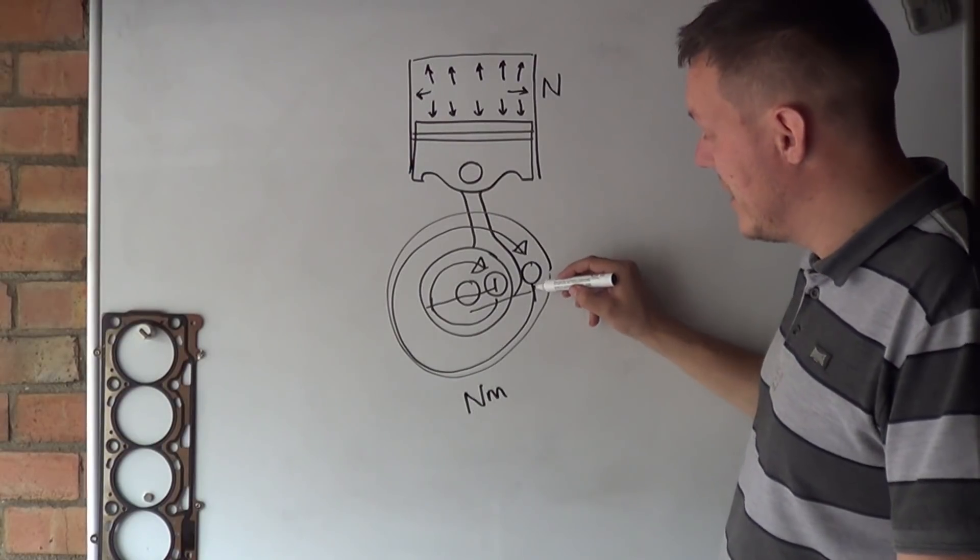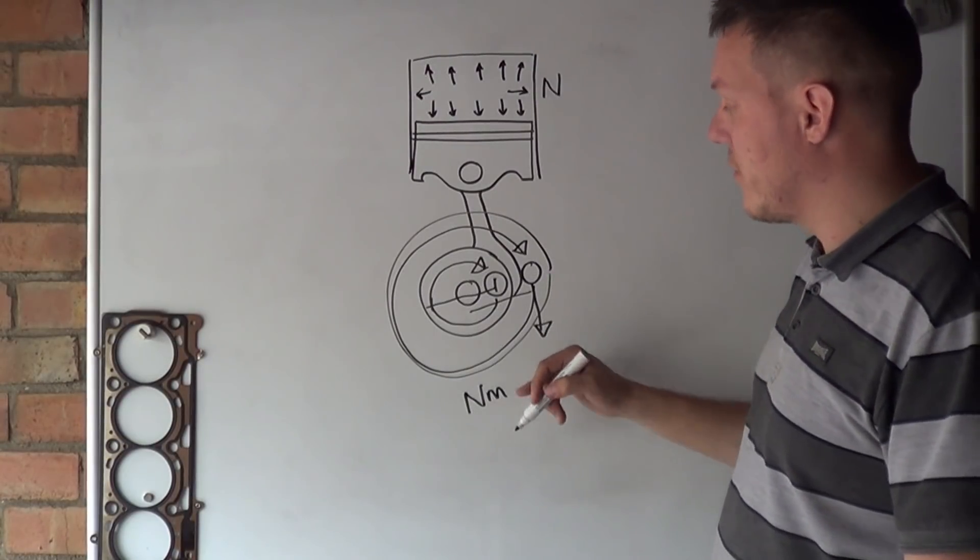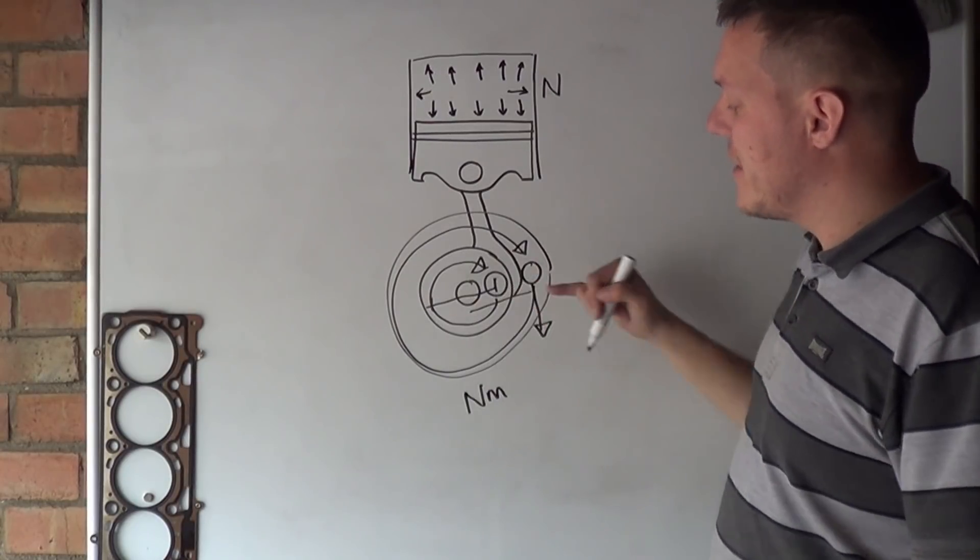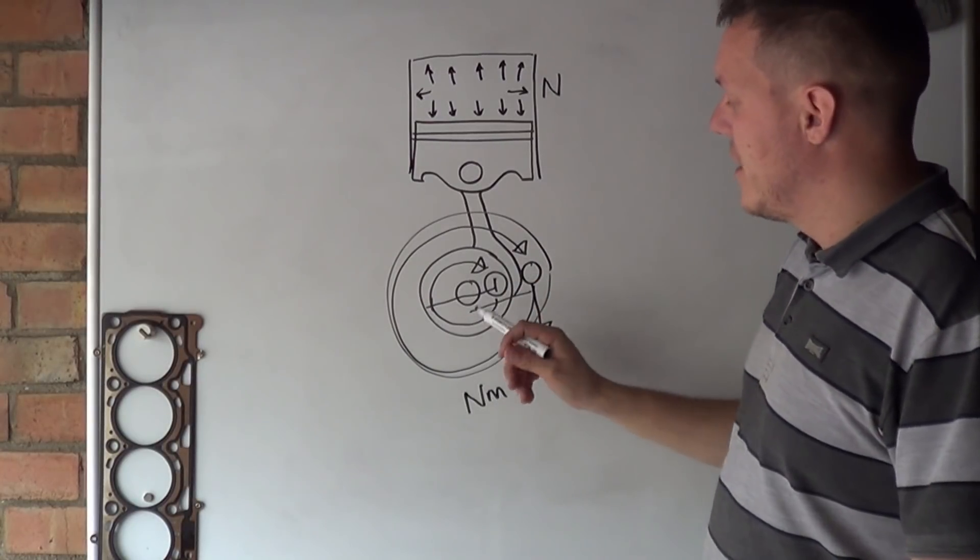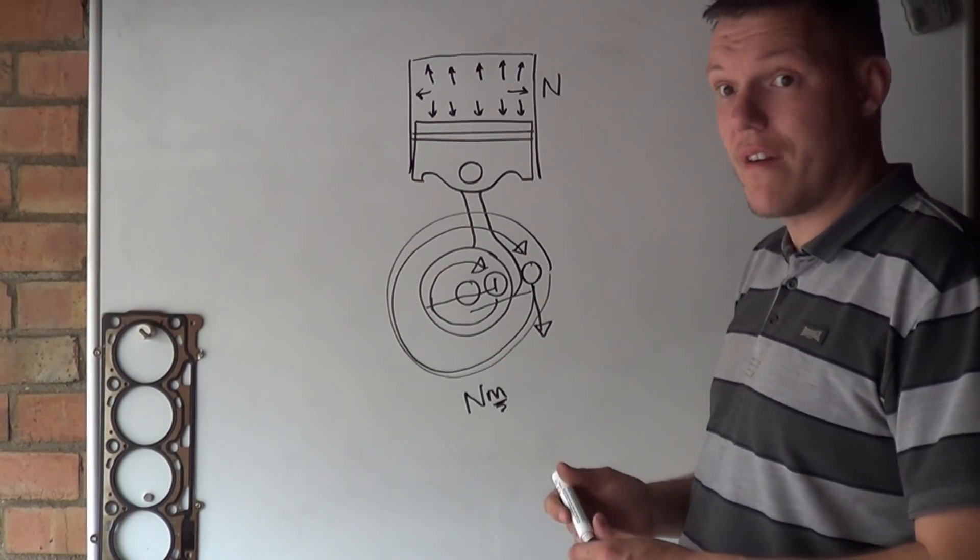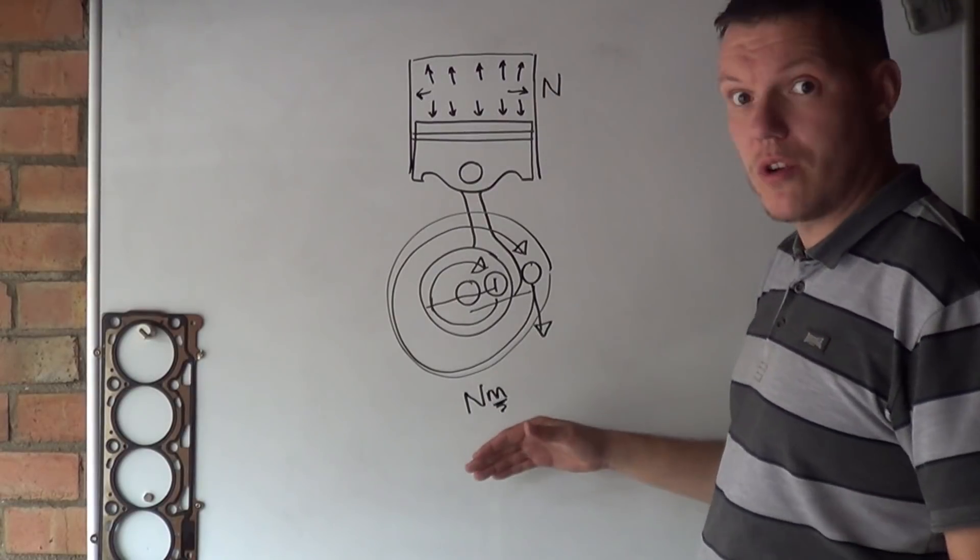If you have a bigger crank, you're going to have higher torque values, because your force, let's just say, is the same, but your lever is a bigger lever. If you have a smaller crank, then your meter section here is smaller, which means you'll have a lower number, a lower torque.